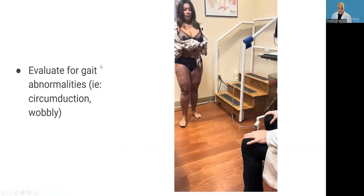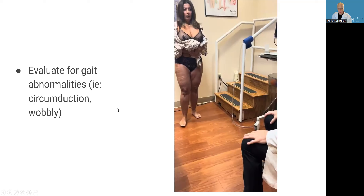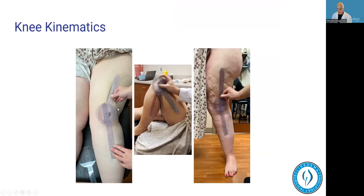We evaluate for gait abnormalities. You can see in this patient that as she starts her gait, she's swinging her foot out instead of straight. That's caused by the bulk of the tissue on the inside of her thighs. That is characteristic circumduction gait we see in lipedema. We also see other gaits like waddling gaits.